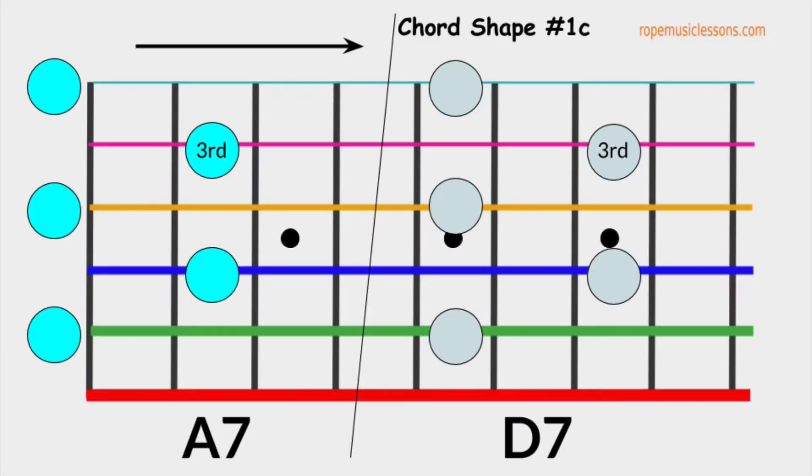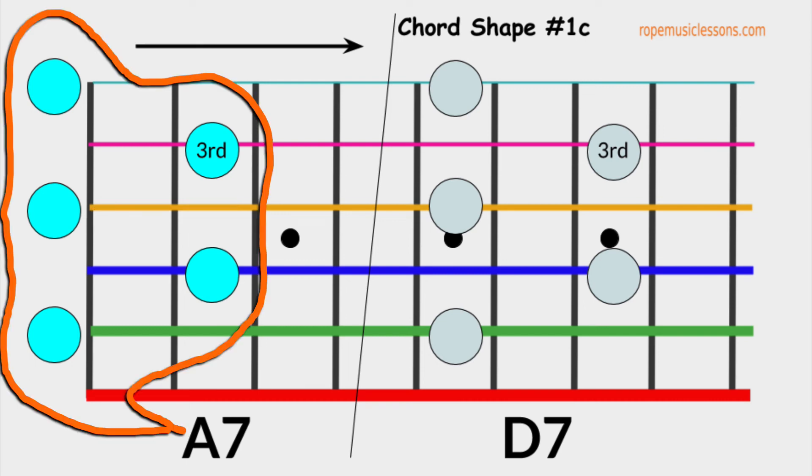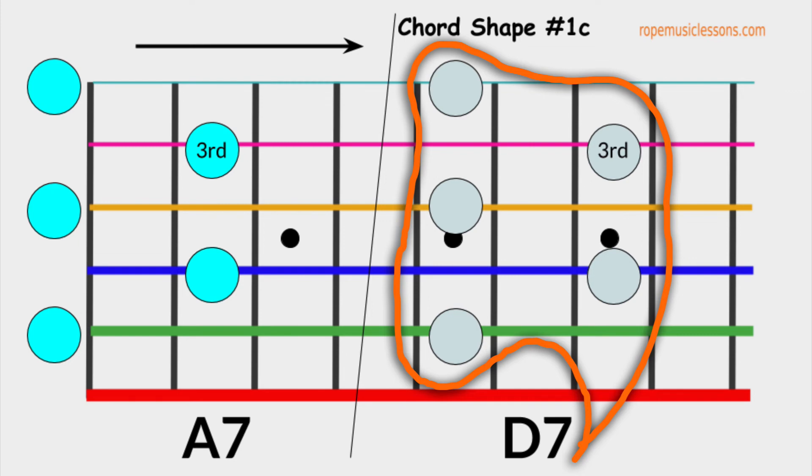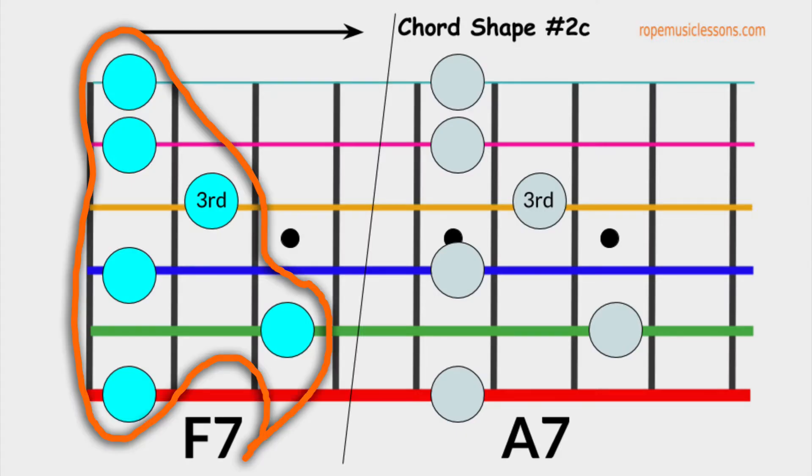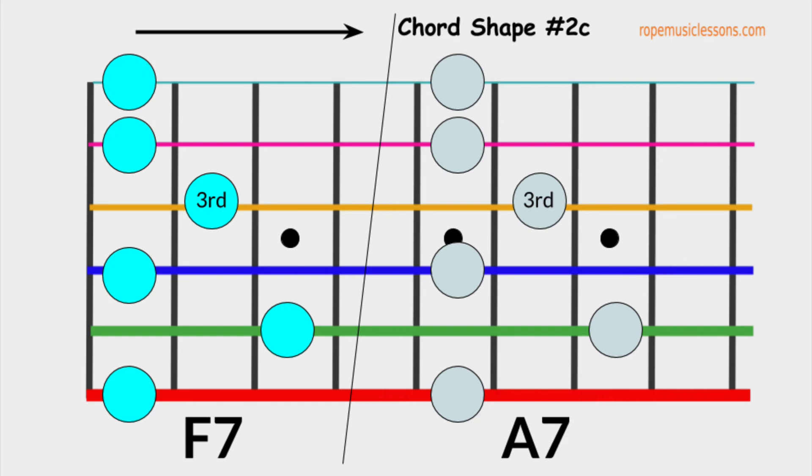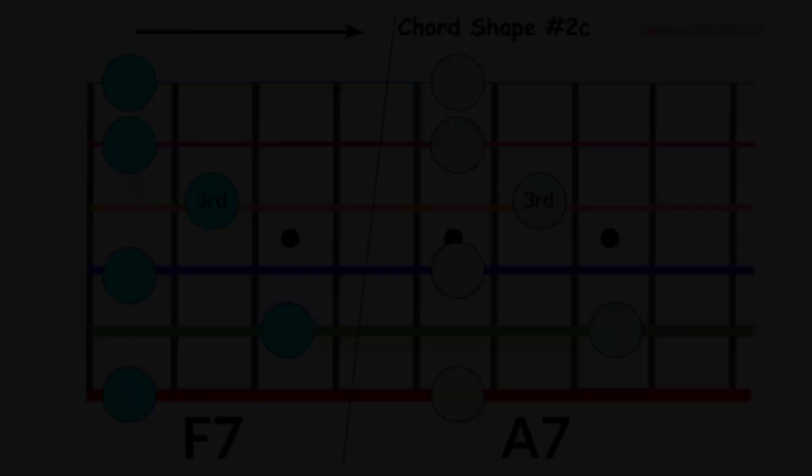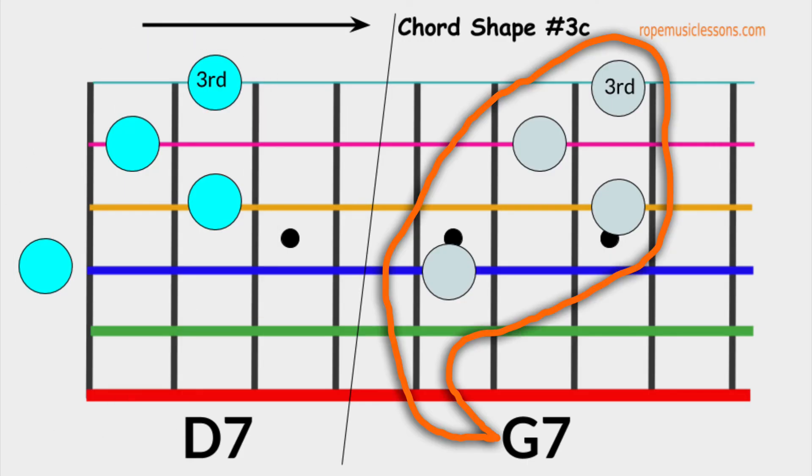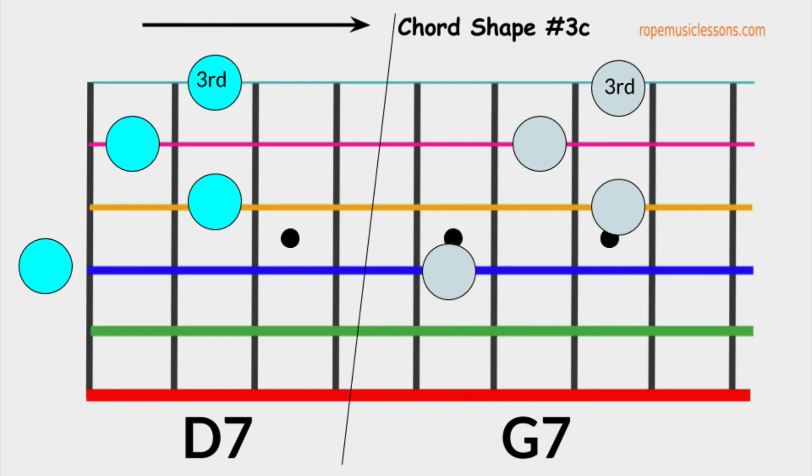Let's move on to dominant 7th chord. We can build a dominant 7th chord by lowering the root by two half steps. This is A7 and D7 shapes. This is also derived from chord shape number 1. So let's call this chord shape number 1C. This is F7 and A7. This is also derived from chord shape number 2. Let's call this chord shape number 2C. This is D7 and G7 shapes. This is derived from chord shape number 3. Let's call this chord shape number 3C.